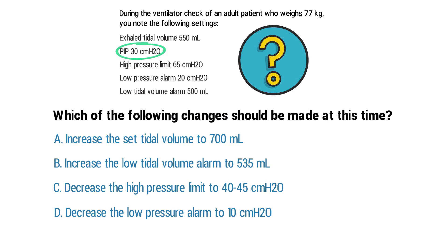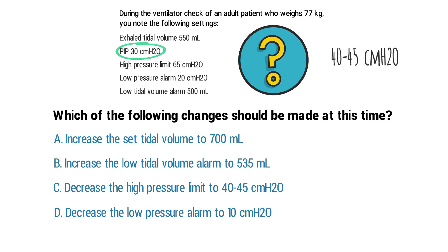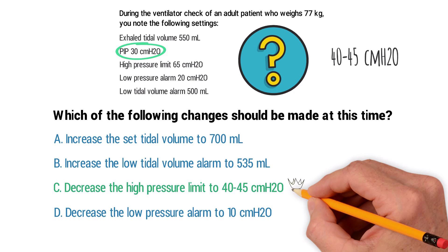For the patient in this question, their peak inspiratory pressure is 30, which means the high pressure limit should be set between 40 to 45 centimeters of water pressure. So by breaking down the question and using what we know about ventilator settings, we can determine that the correct answer is C: decrease the high pressure limit to 40 to 45 centimeters of water pressure.